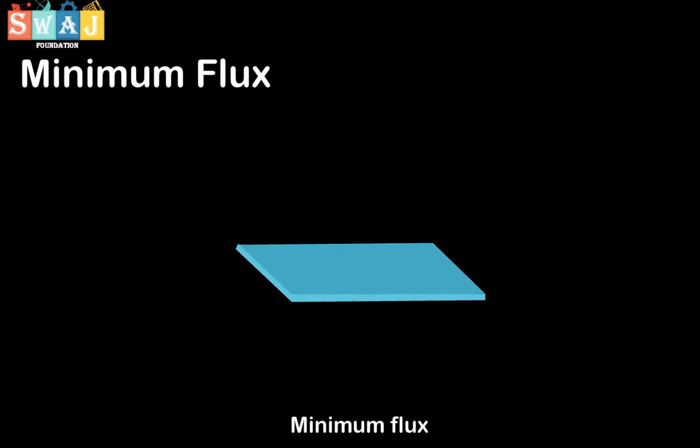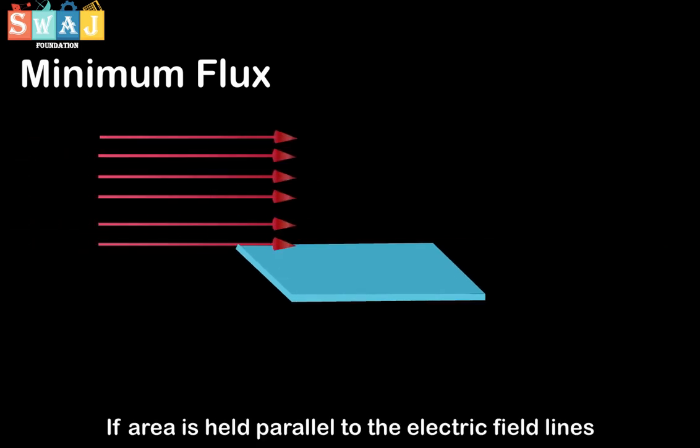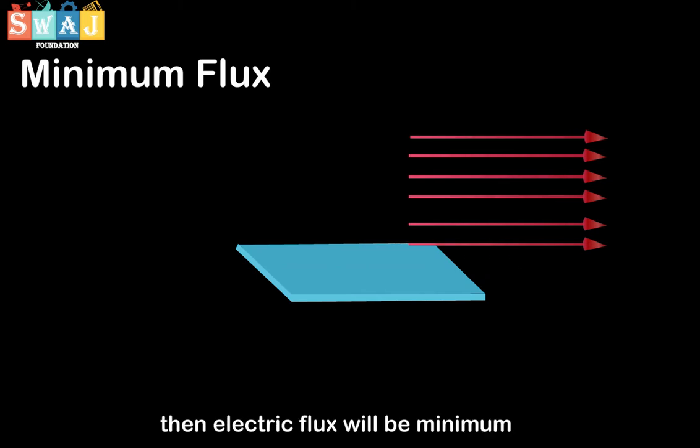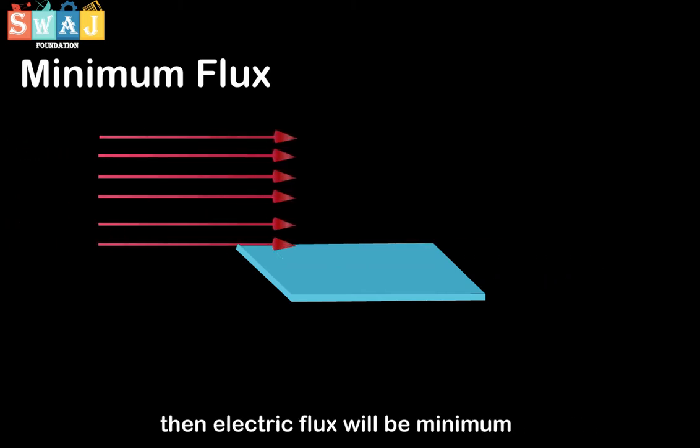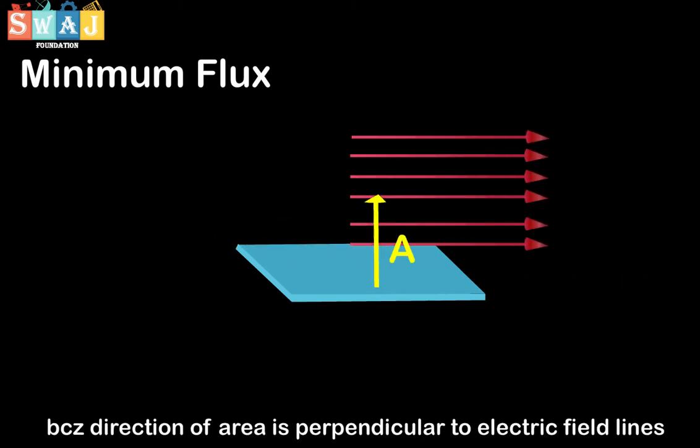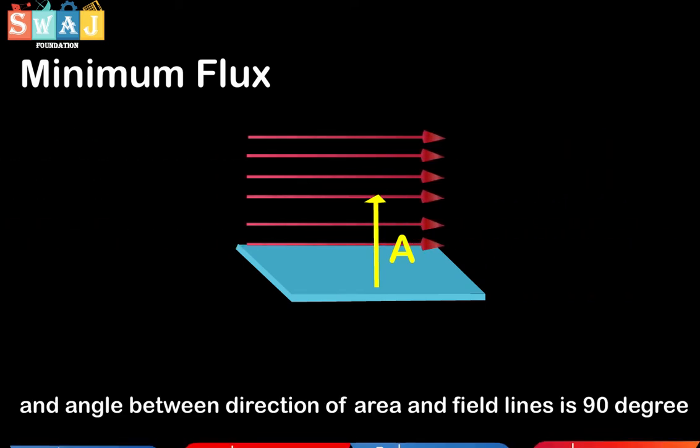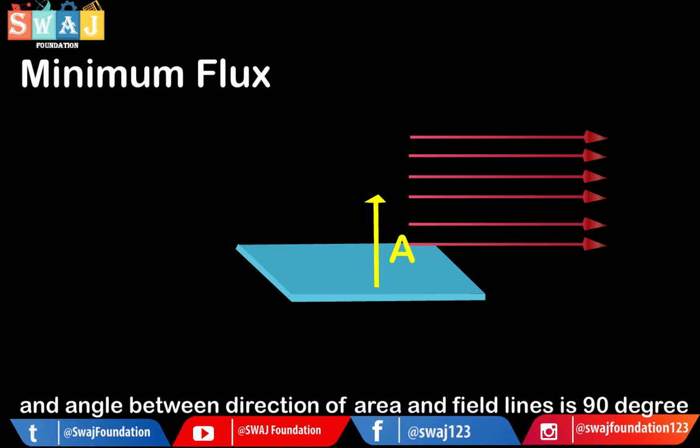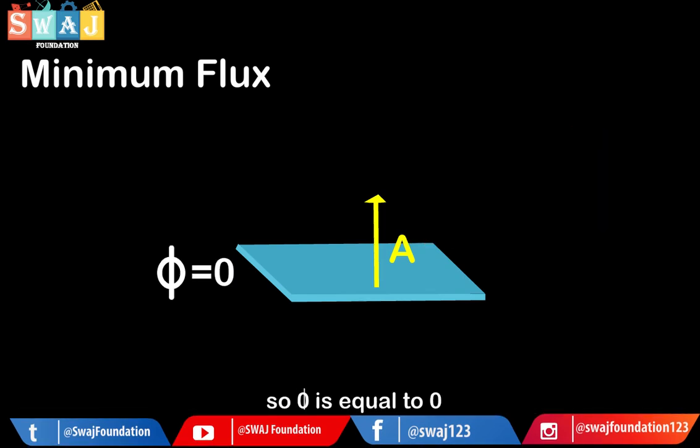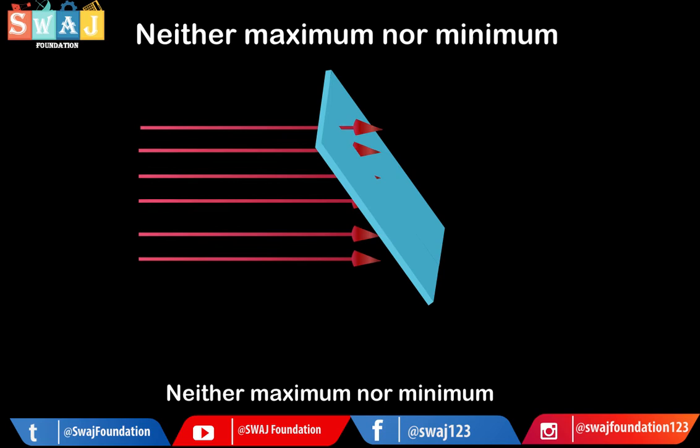Minimum flux. If area is held parallel to the electric field lines, then electric flux will be minimum because direction of area is perpendicular to the field lines and angle between direction of area and field line is 90 degree. So Phi is equal to zero.